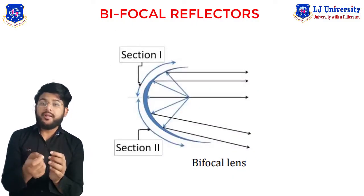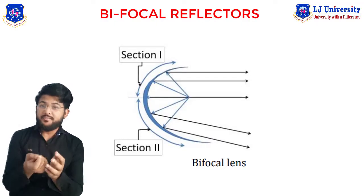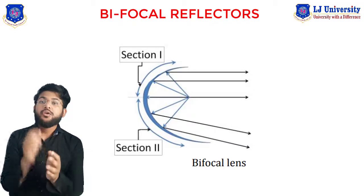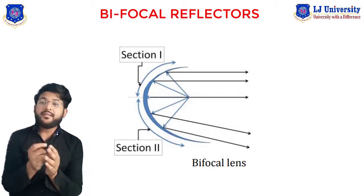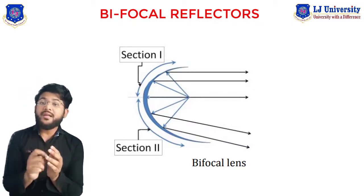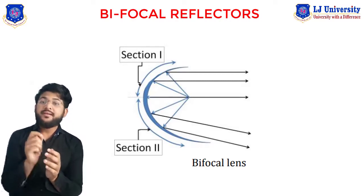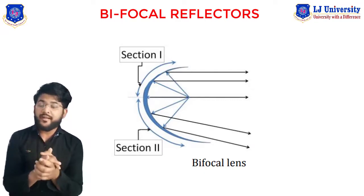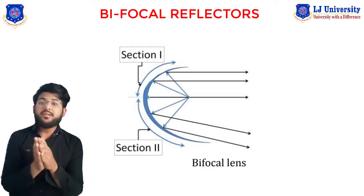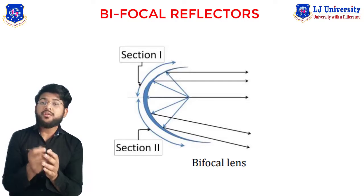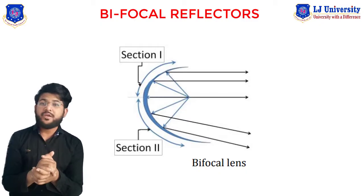The second type is the bifocal reflector. As the name suggests, it has two different curved surfaces with two focal points. This helps to take advantage of the light striking the lower reflector area. The parabolic section of the lower portion is designed to reflect light further down to improve near-car visibility. This system is not suitable with twin filament bulbs and is only used for vehicles with four headlamps.